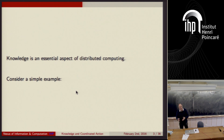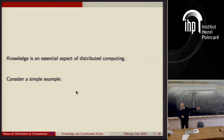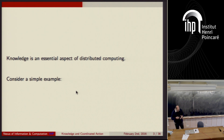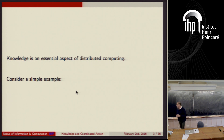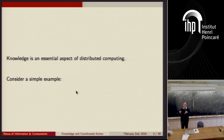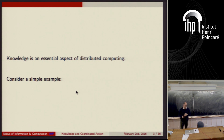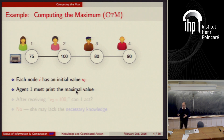When we design protocols for, say, doing electronic mail or solving some problem over the internet, we talk a lot about knowledge — what one knows about another, when we get an acknowledgement, we know that something happened somewhere, so now we can change our communication or rely on some other site being ready. The study of knowledge goes back thousands of years; philosophers in China and Greece have studied it. I want to show you in a very concrete way why knowledge is really essential in distributed computing.